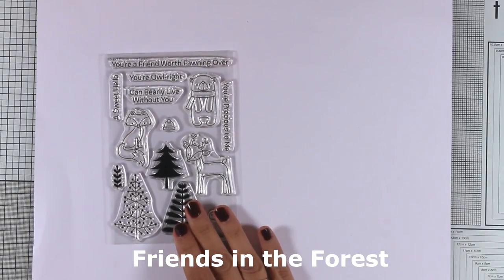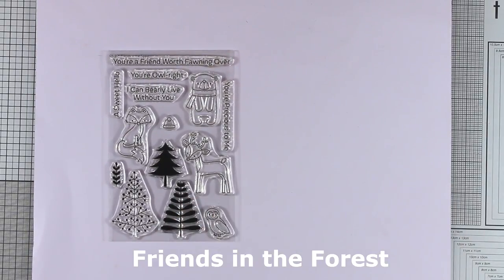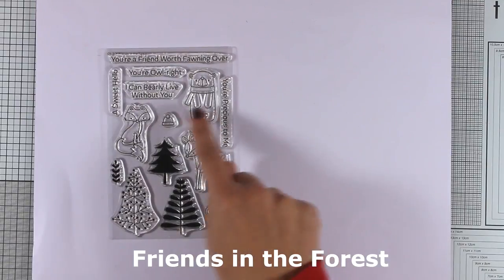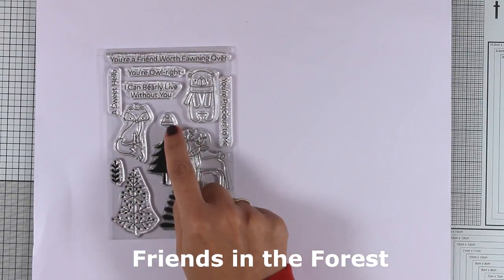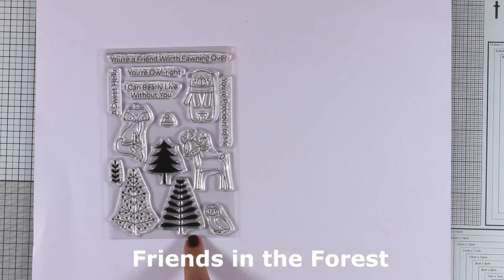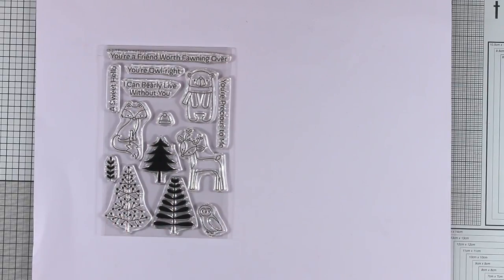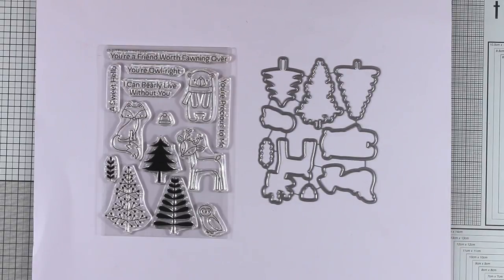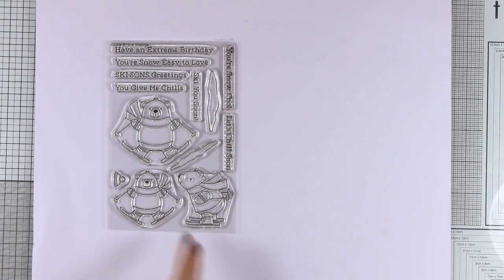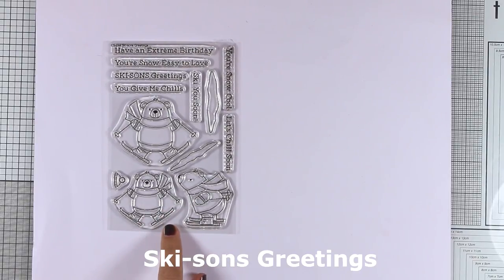This release is packed with adorable stamp sets you will love. Let's start with Friends in the Forest. It gives you four different creatures and a little hat that you can place on top of each creature. There are also lovely trees to create beautiful scenes, and as always, there are matching dies available in case you want to pop all those designs on your cards.